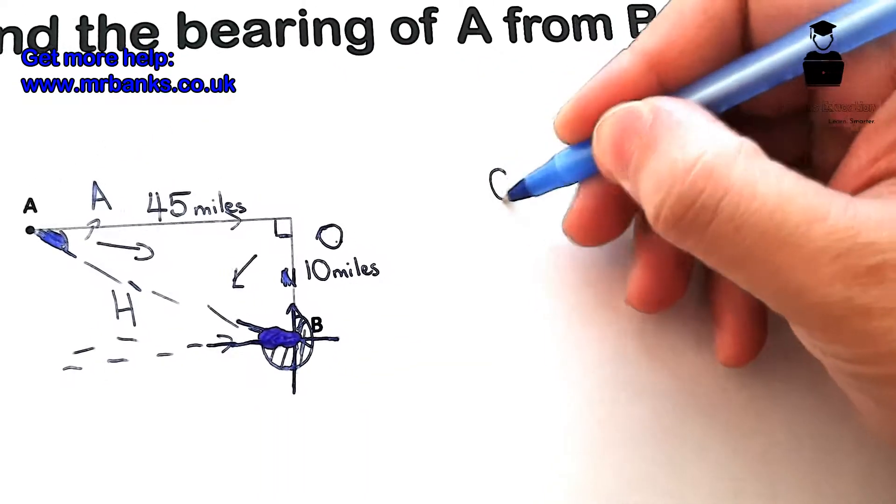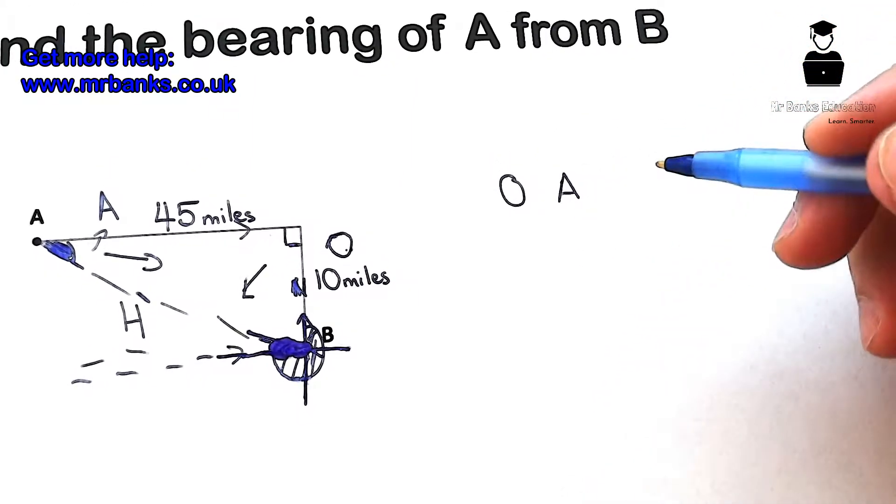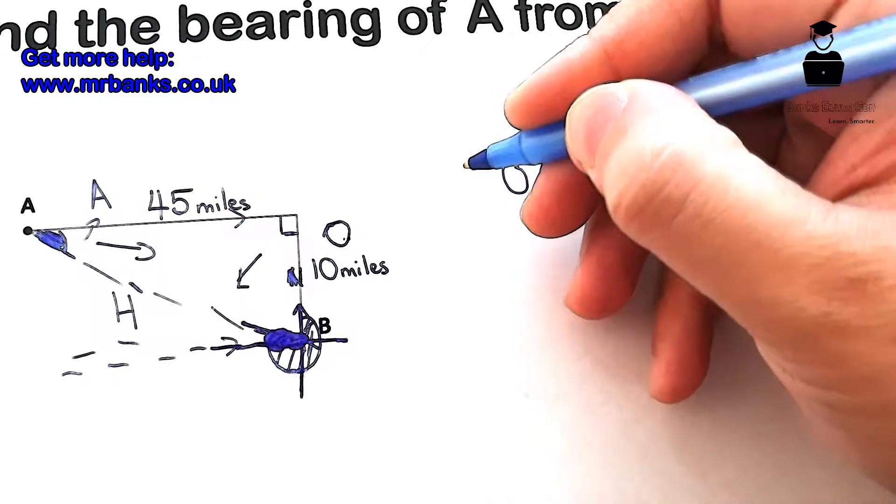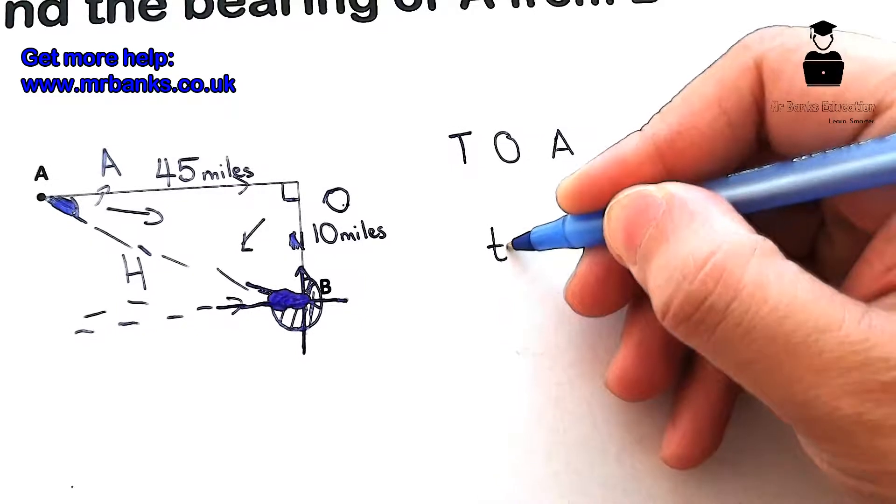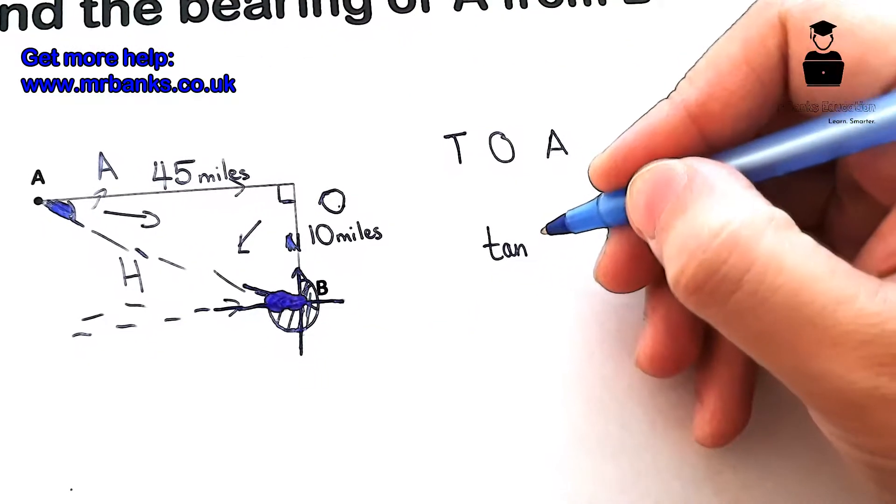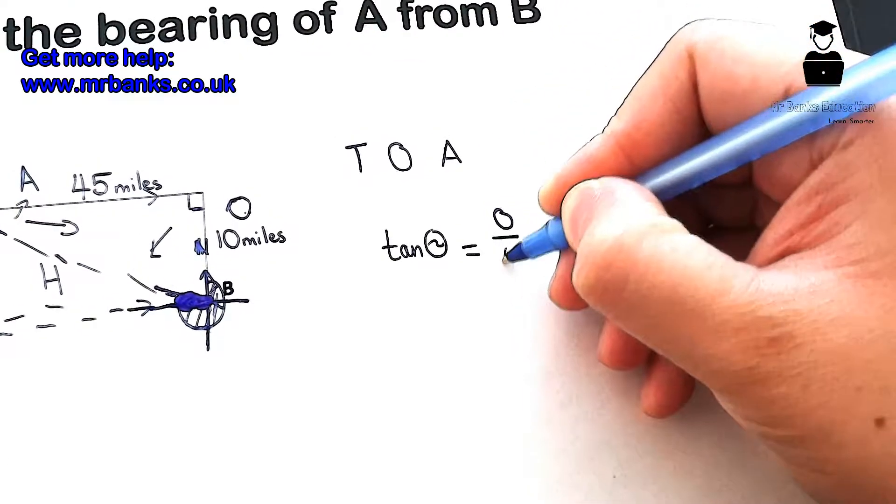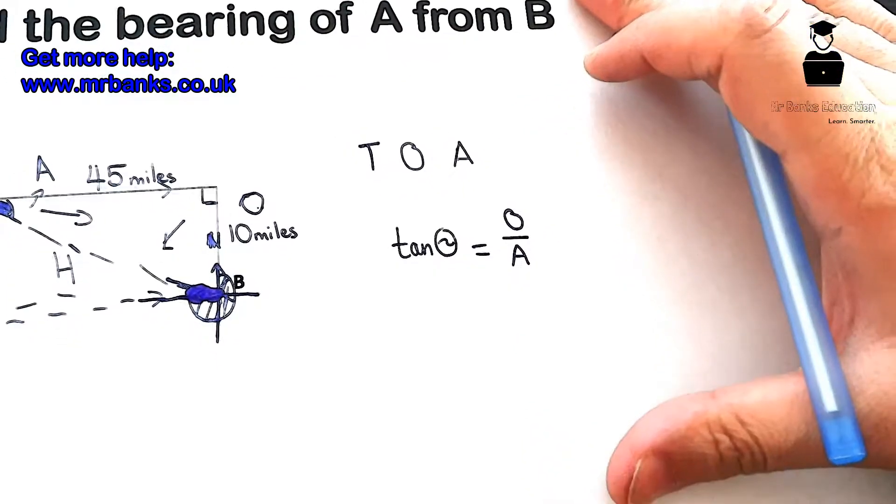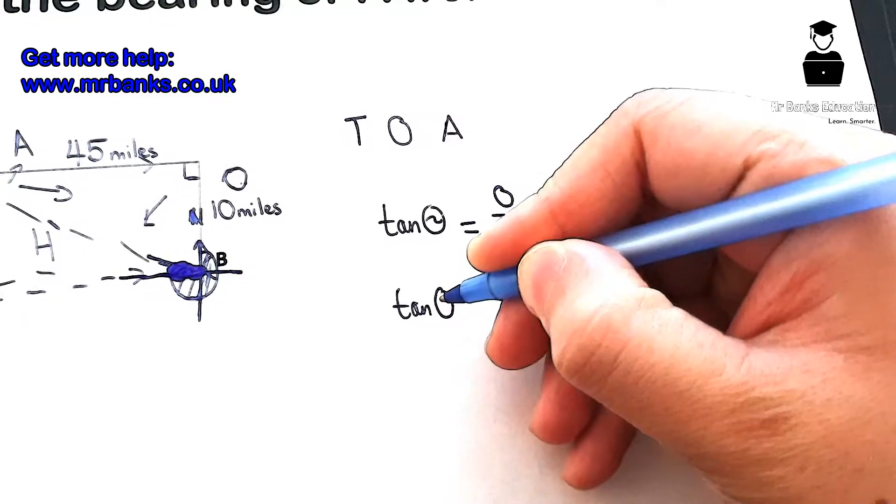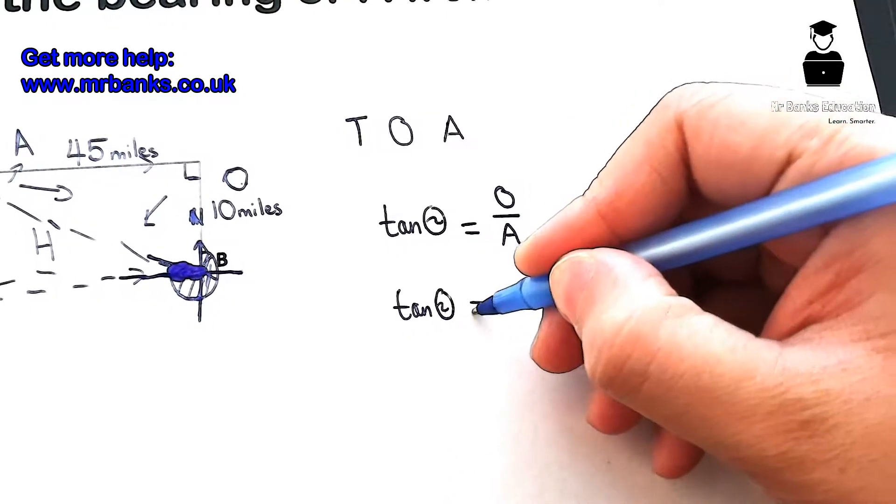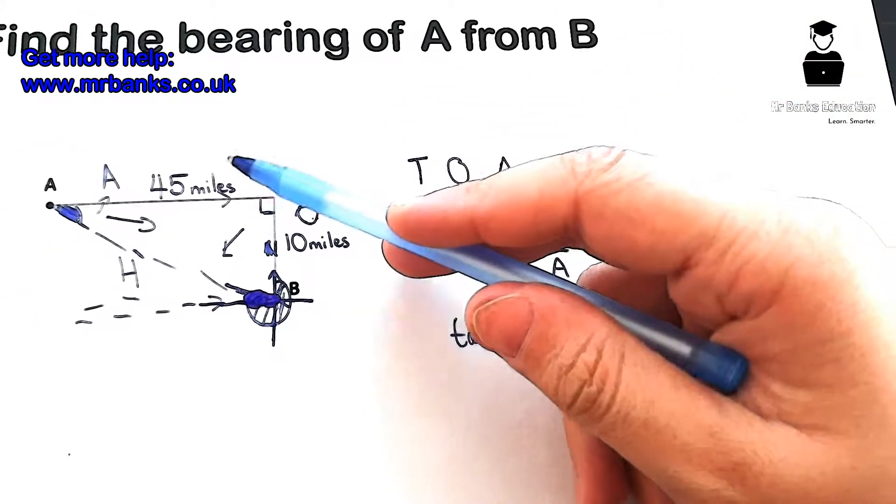So we've labeled everything. What information do we have? We have information on side O and side A. So O and A, that if you know your SOH CAH TOA rule, this is going to be TOA. So tan of the angle equals opposite over adjacent. The opposite is 10, so tan of the angle equals opposite, which is 10, over adjacent, 45.